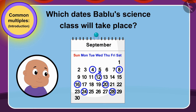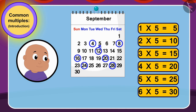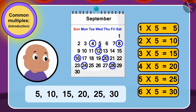Well done children, your answer is absolutely correct. We can find multiples of 5 in this way by using tables of 5. Bablu will go to science class on 5, 10, 15, 20, 25, and 30 dates.